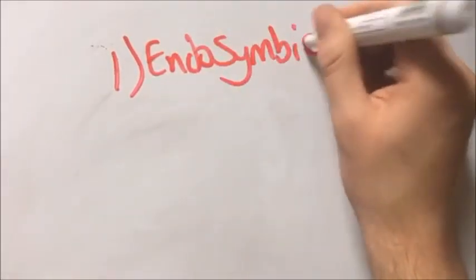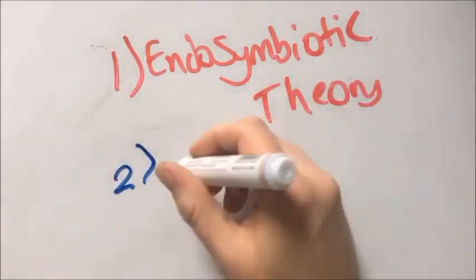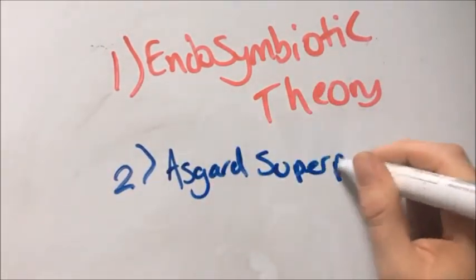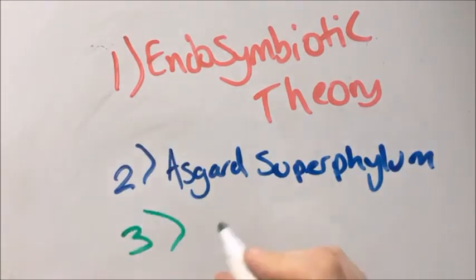And there you have it, a brief rundown of the endosymbiotic theory, the Asgard superphylum, and what we currently know about how mitochondria developed to allow eukaryotic development.